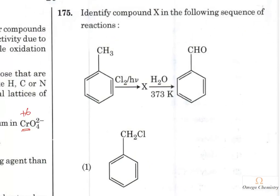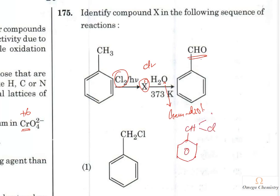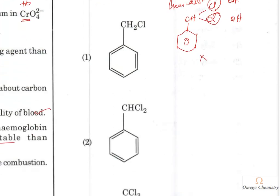Question 167: Identify compound X in the sequence: toluene is reacted with chlorine in the presence of sunlight (free radical side-chain chlorination). The final product is an aldehyde, so X must have contained two chlorine atoms on the side chain (–CHCl₂, benzal chloride). Both chlorines are replaced by –OH groups forming a gem-diol, which is highly unstable and eliminates water to give the aldehyde product. Two chlorine atoms is the right answer.